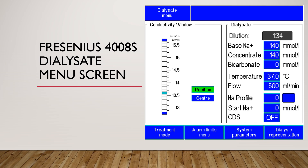For example, your A-part solution usually contains 103 millimole per liter sodium, and the bicarbonate or B-part contains 35 millimole per liter sodium. In this scenario, your base sodium will be 103 plus 35, which equals 138 millimole per liter.